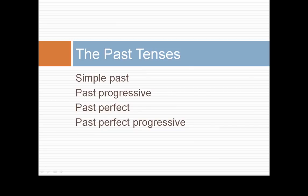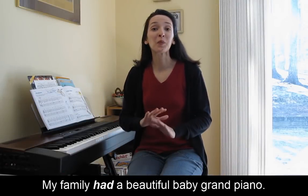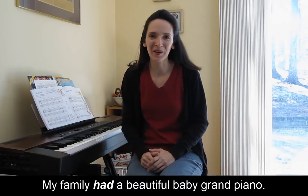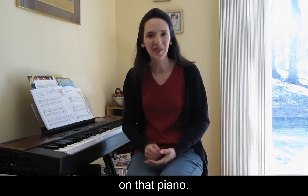Finally, let's look at the past tenses: the simple past, past progressive, past perfect, and past perfect progressive. The simple past is used for finished actions or events. My family had a beautiful baby grand piano. I was lucky because I learned to play on that piano.